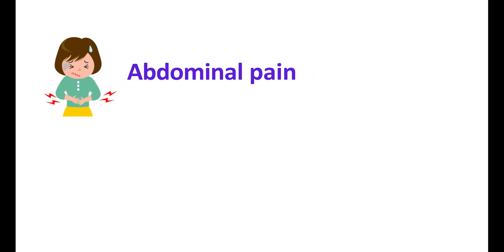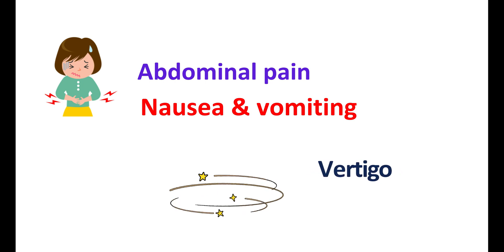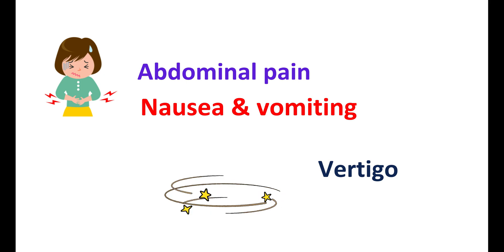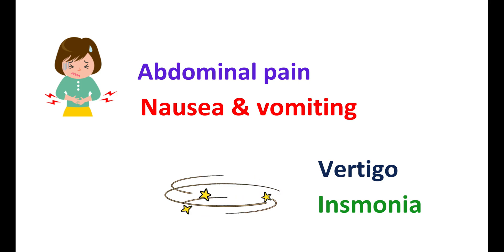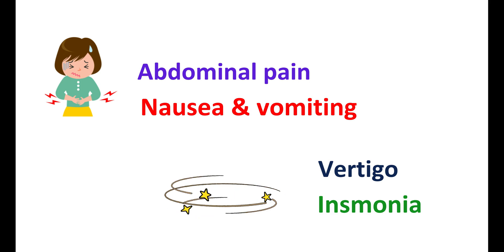Now let us look at the side effects of this medication. Oseltamivir mainly produces gastrointestinal symptoms such as abdominal pain, nausea, and vomiting — that is why it is preferred to be taken with food. It can also produce central nervous system disorders, particularly vertigo, reeling sensation, and dizziness. Some people may also experience insomnia with use of oseltamivir.